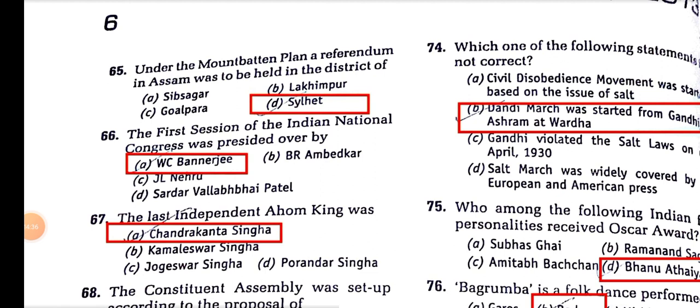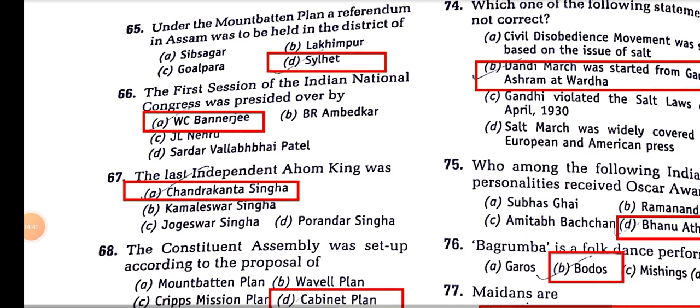Under the Mountbatten Plan, a referendum in Assam was to be held in the district of Sylhet, which was transferred to East Pakistan after the independence of India. The first session of the Indian National Congress was presided over by V.C. Bannerjee in 1885 in Bombay.